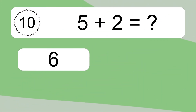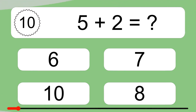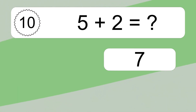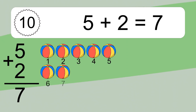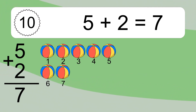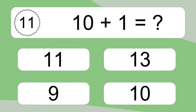5 plus 2 equals what? 5 plus 2 equals 7. Let's count it: 1, 2, 3, 4, 5, 6, 7.